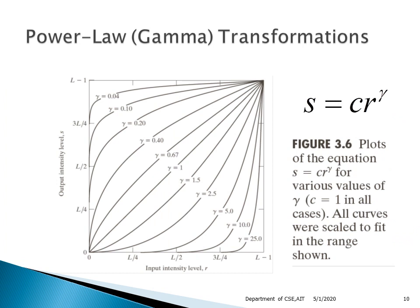The next transformation is the gamma transformation, also called the power law transformation, where s = c·r^γ, and c and gamma are positive constants. Power law curves with fractional values of gamma map a narrow range of dark input values into a wider range of output values, with the opposite being true for higher values of gamma. Looking at the curves, as gamma increases from 1, the mapping changes accordingly on both sides.